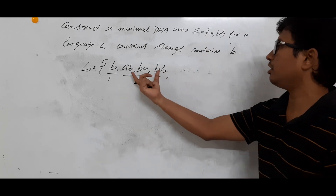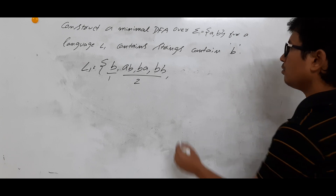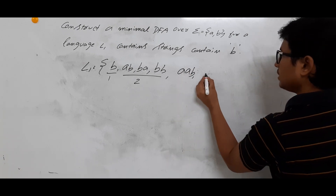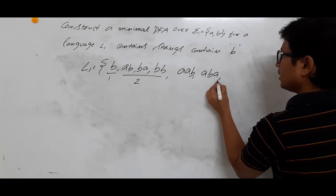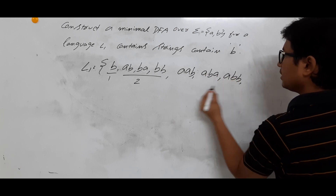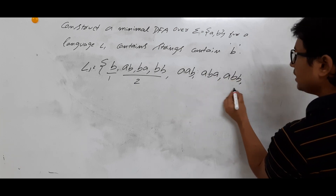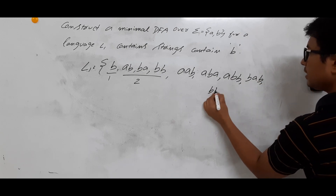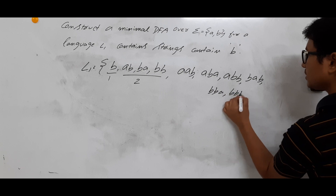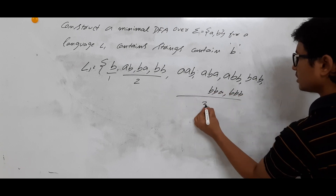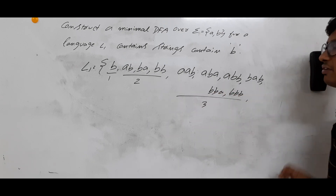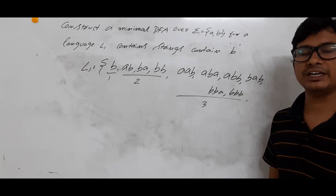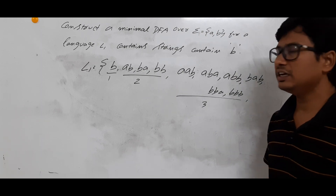For length three, we have: aab, aba, abb, bab, bba, bbb, and so on. You can similarly find strings of length four, length five, and so on. So first, is this a finite or infinite language? It is an infinite language.